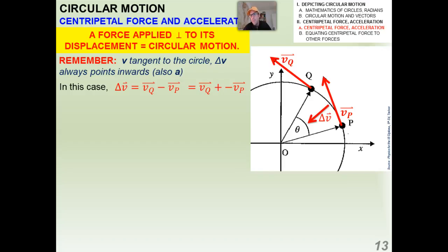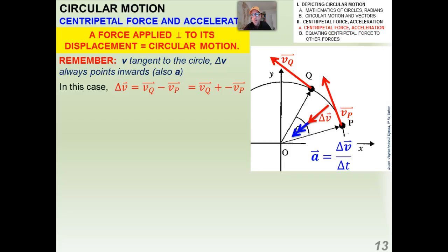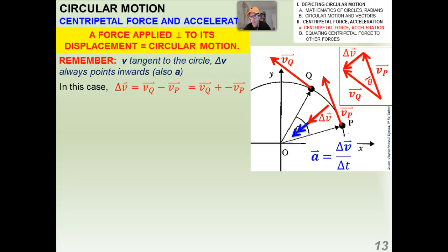We're going to revisit that geometry in a slightly more advanced fashion. I have an object — this black dot — moving from point P to point Q in a circular fashion. A Cartesian coordinate system is set up with the origin at the center of the circle. To find the change in velocity going from P to Q, I subtract the initial velocity from the final velocity: VQ minus VP, which is VQ plus negative VP. This gives a change in velocity vector pointing towards the center, and the double-arrow vector indicates acceleration delta V over delta T. I'll analyze this triangle in more detail, calling the angle between VQ and VP theta.